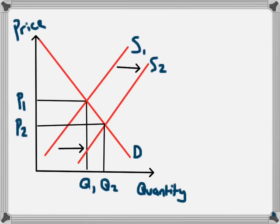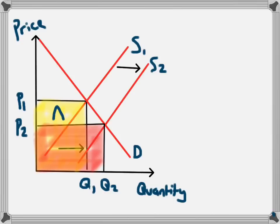The decrease in price could also reflect one of the other factors causing this change — for example, if there was a decrease in the cost of factors of production, that will be factored into the price. The effect on business revenue is shown by these boxes. The original revenue is the yellow box, and the new equilibrium gives a new revenue box. The business has lost area A of revenue and gained area B. It's difficult to say what the overall effect on revenue is — it depends on the relative size of those areas, which is influenced by the price elasticity of demand, which we'll look at in another video.